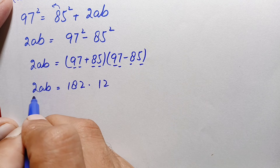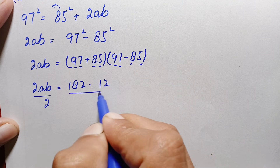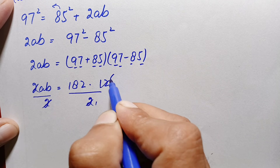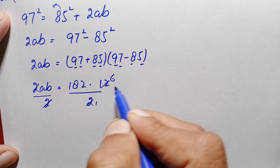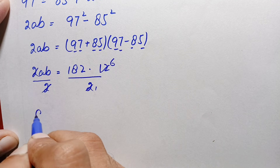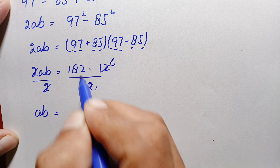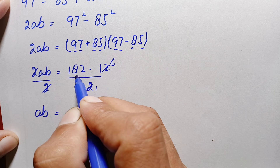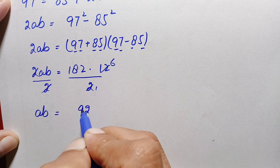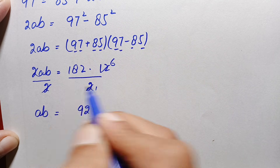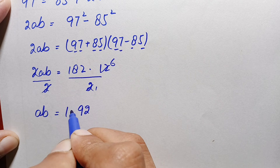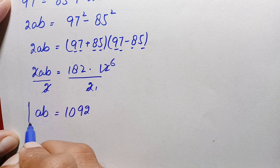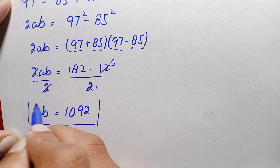Dividing both sides by 2: ab = 182 × 6. Calculating: 6 × 2 = 12, carry 1; 6 × 8 = 48, plus 1 = 49; 6 × 1 = 6, plus 4 = 10. So ab = 1092.